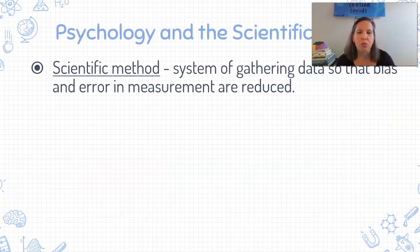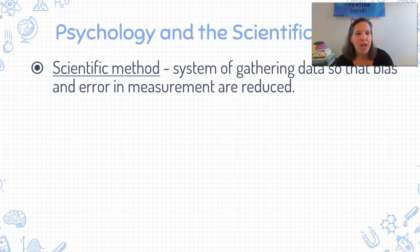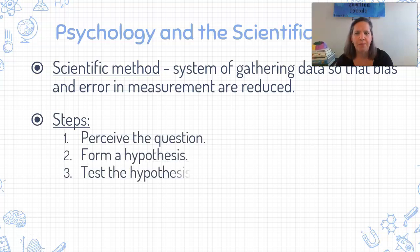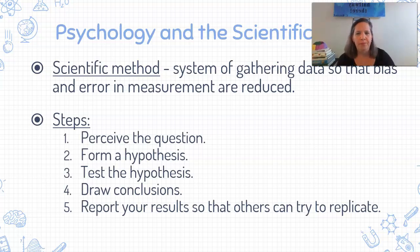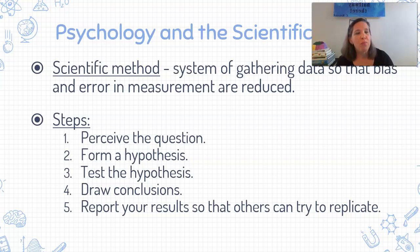Alright, so scientific method. This is just a really quick review because I know most of you have been learning the scientific method since about fifth grade. Every time you take a science class, you learn about the scientific method. So this is just that system that is in place so that we can gather data that is true and accurate. The steps to our scientific method are: have a question, form a hypothesis, test your hypothesis, collect the data, and based on the data, draw some conclusions, and then report your results.